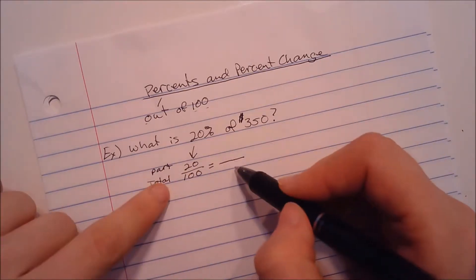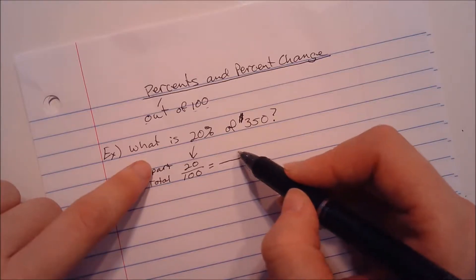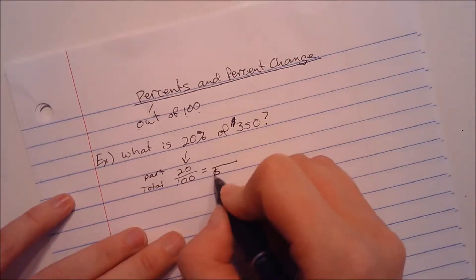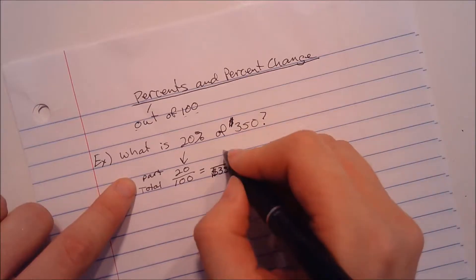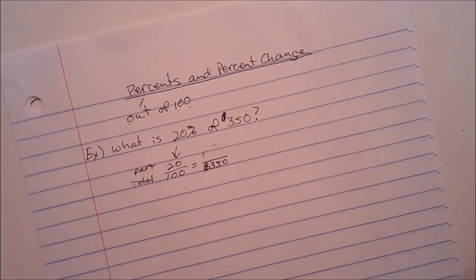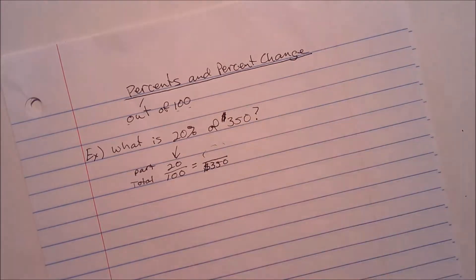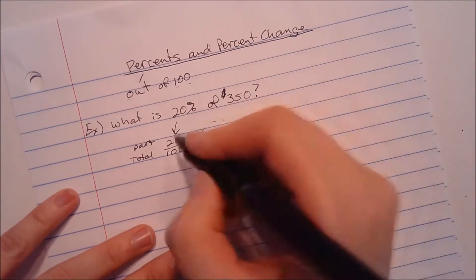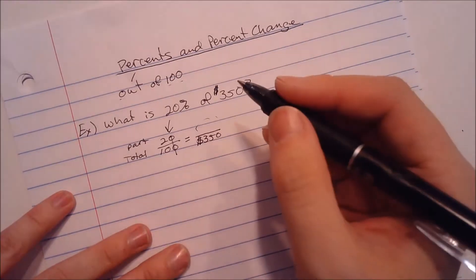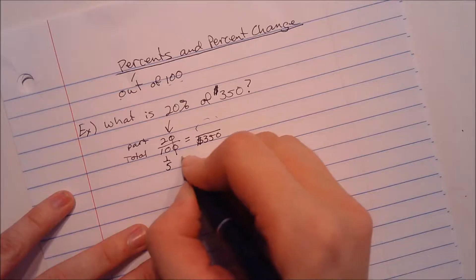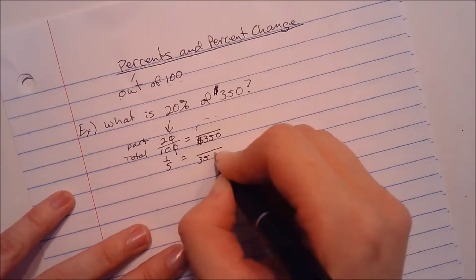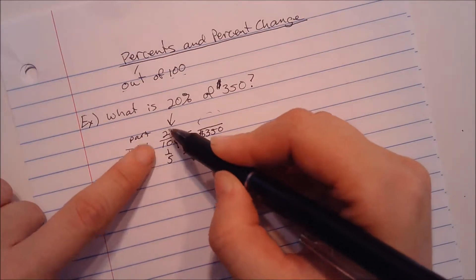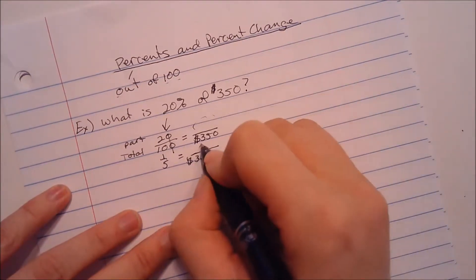Is $350 the total price, or is it the part? In this case, maybe it's a discount, a 20% discount. $350 is the total price. You're trying to figure out what the 20% part is. That's what it means by what is 20% of $350. Next thing you want to do, especially if you're doing this without a calculator, you would need to simplify this down a little bit. 20 out of 100 is the same as 2 out of 10, which is the same as 1 fifth.